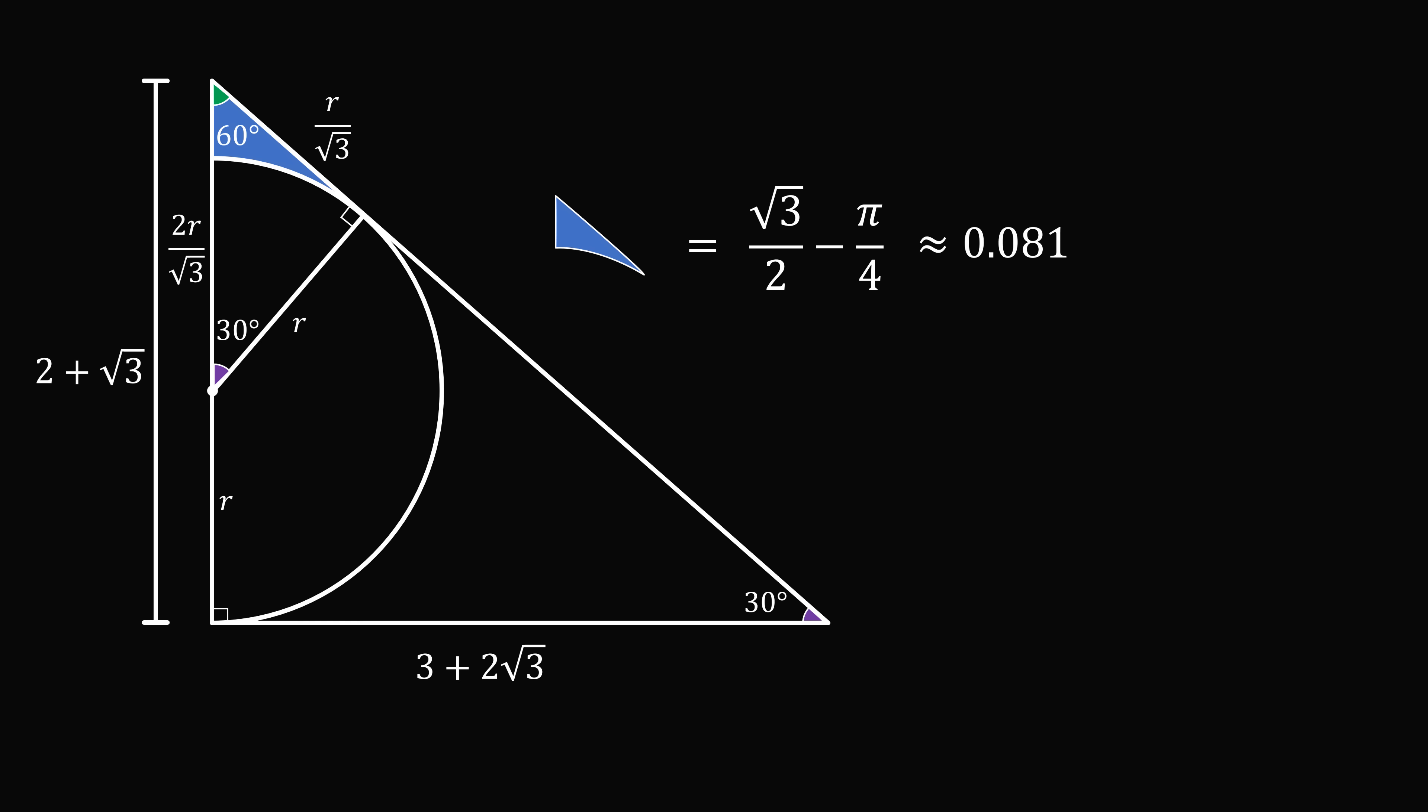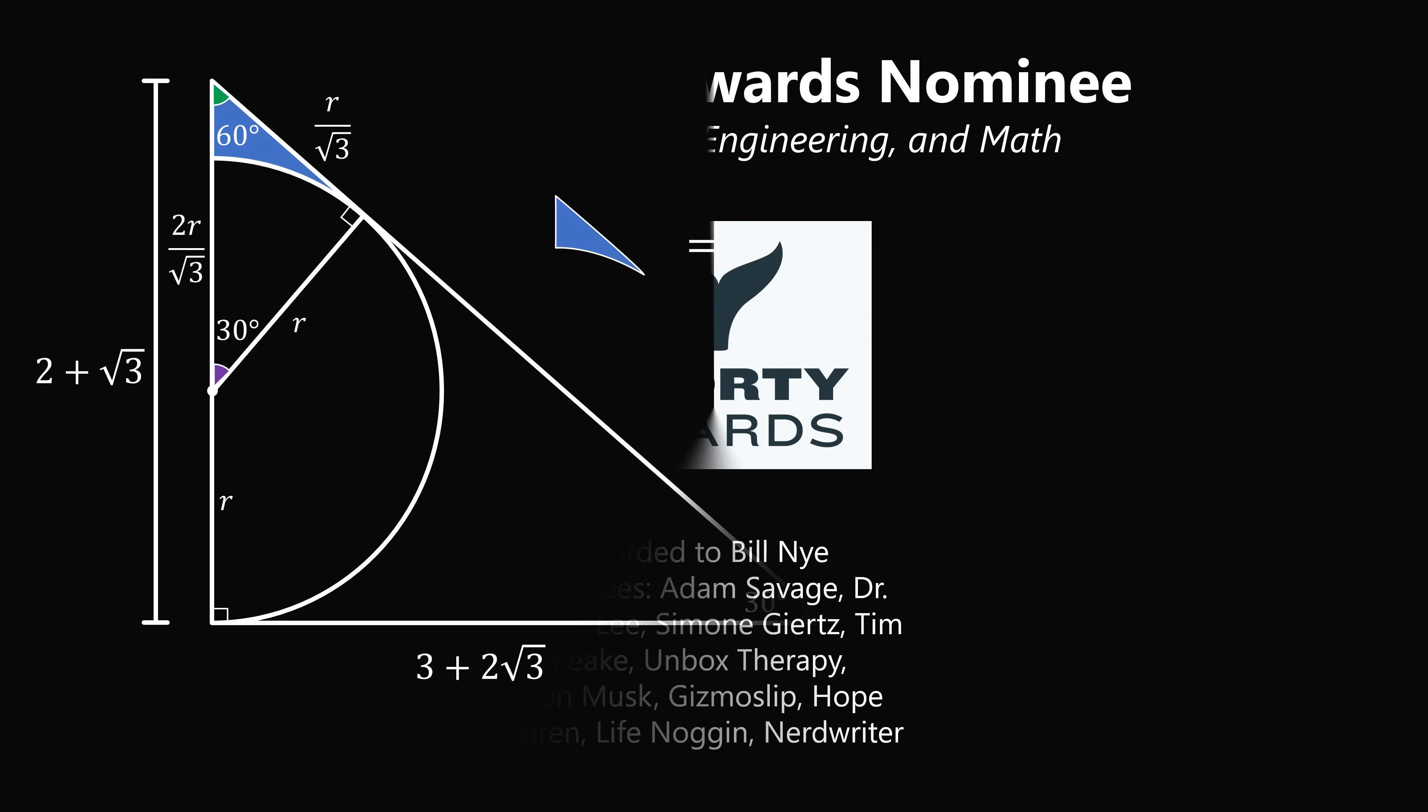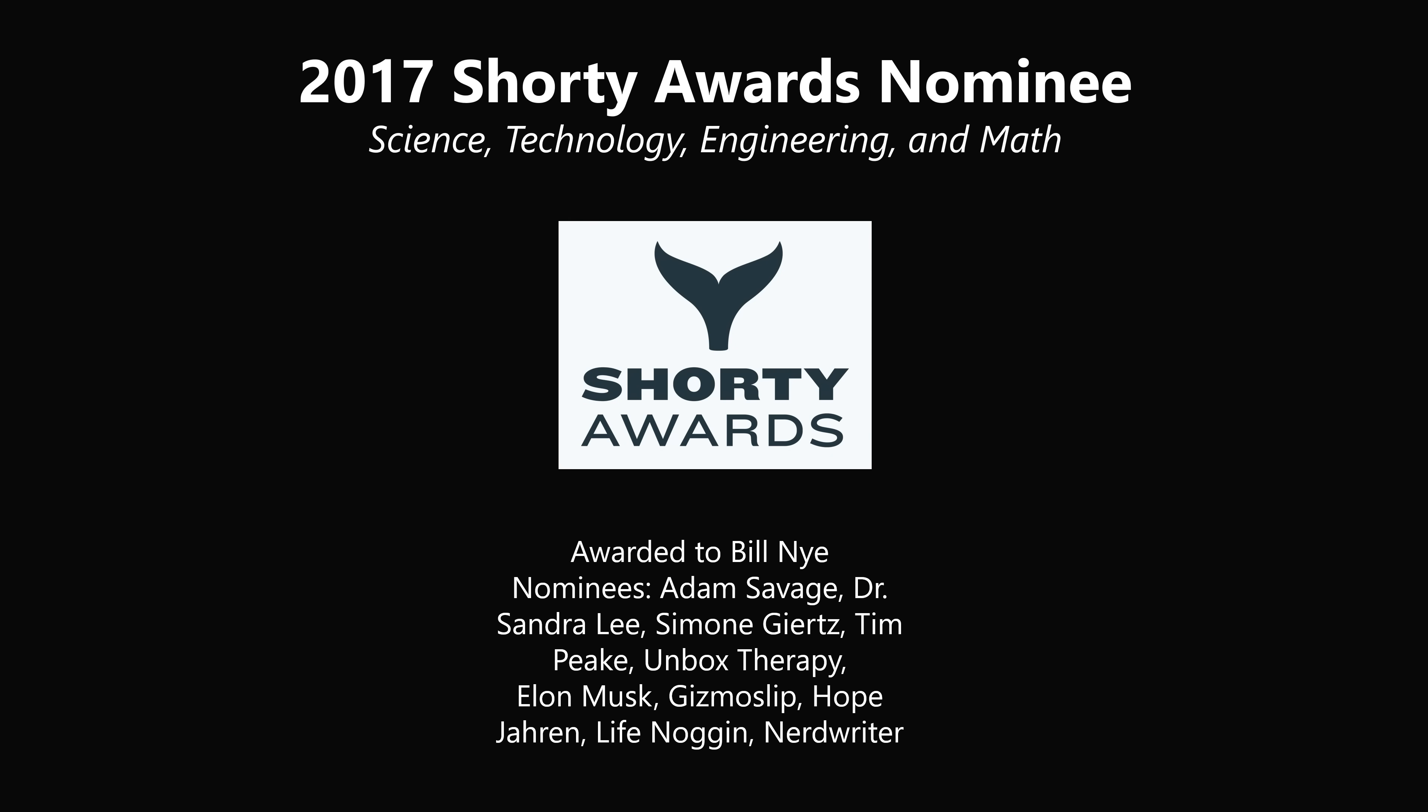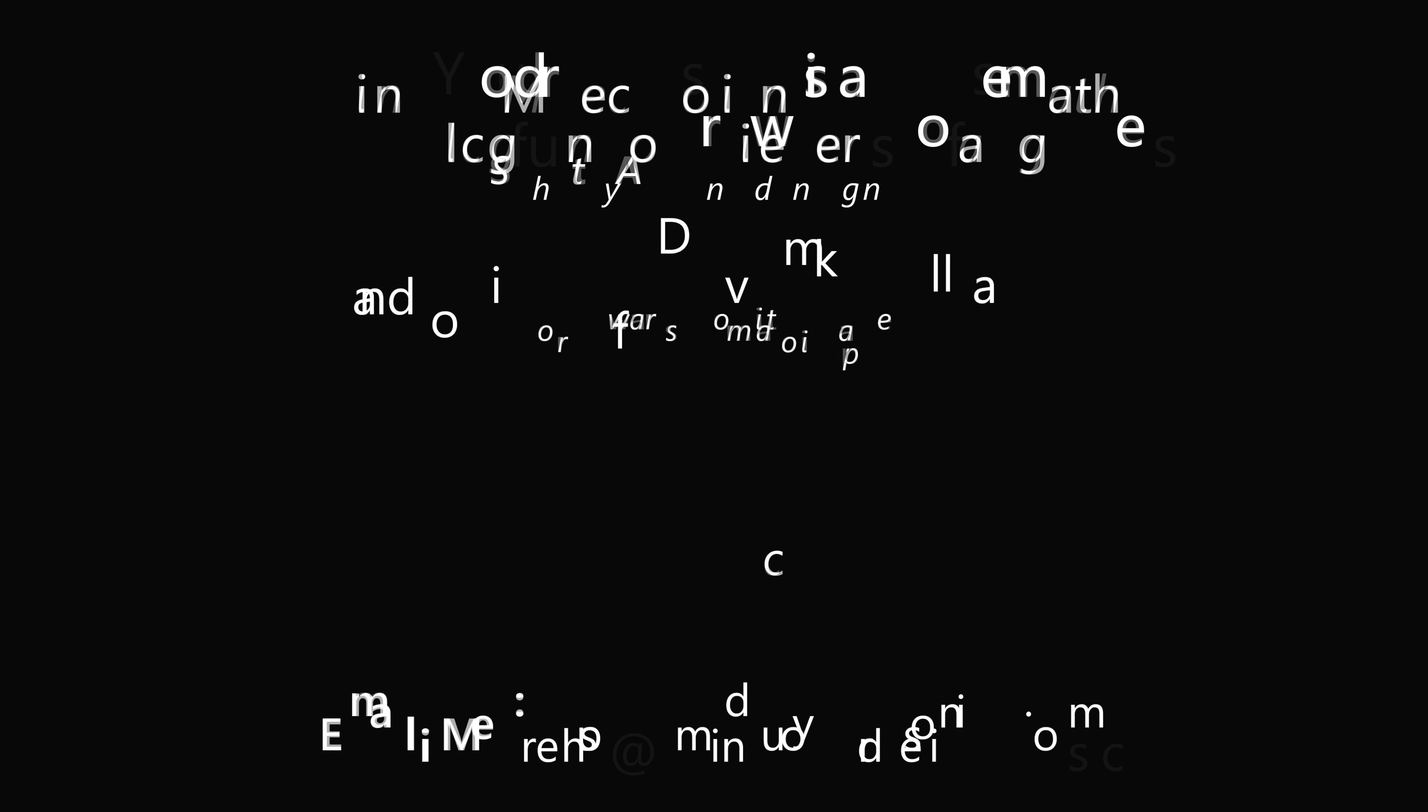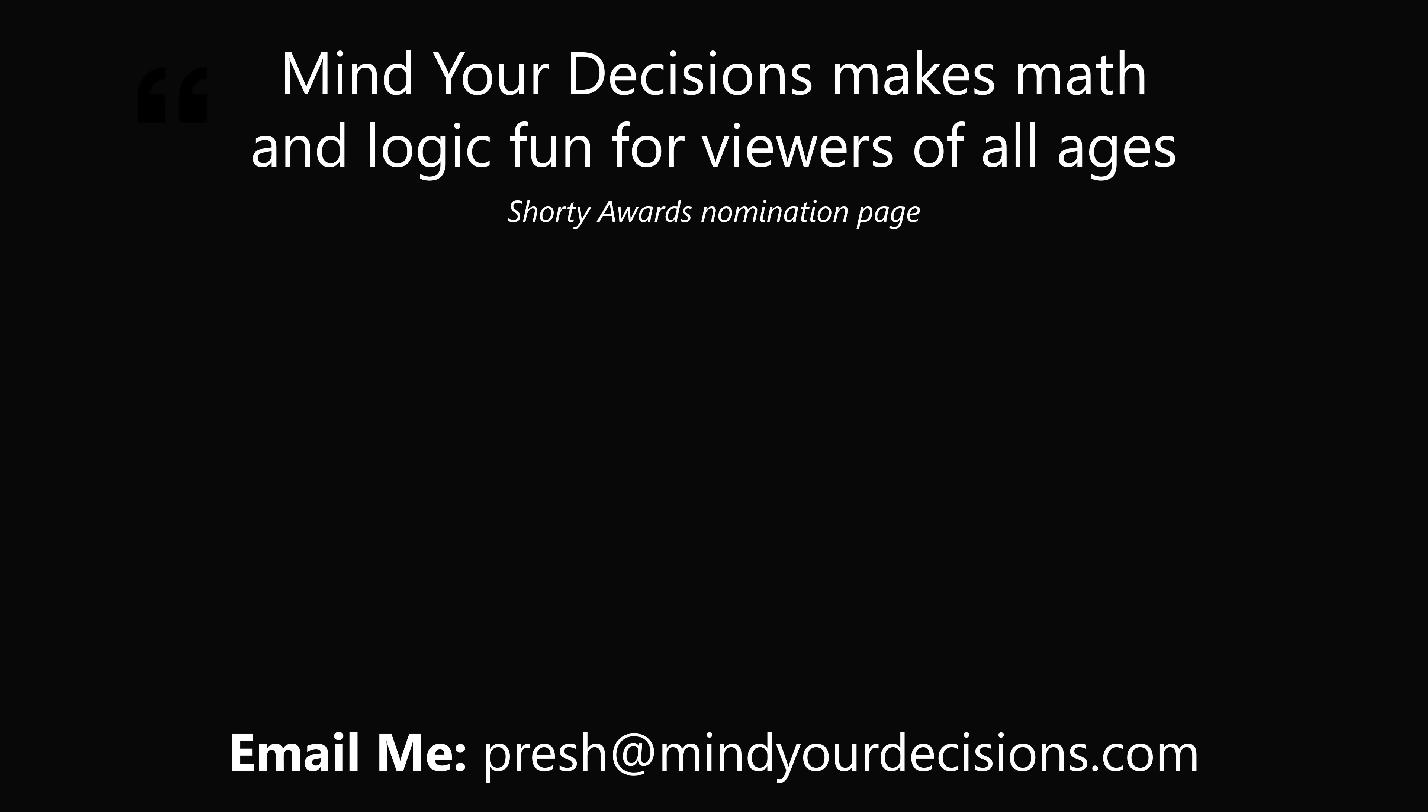The area of this region will be equal to root 3 divided by 2 minus pi over 4, which is approximately equal to 0.081. And that's the answer. Thanks for making us one of the best communities on YouTube. See you next episode of Mind Your Decisions where we solve the world's problems one video at a time.